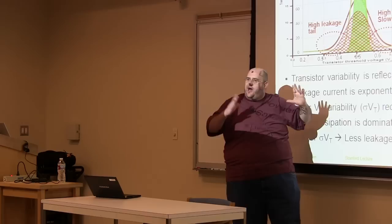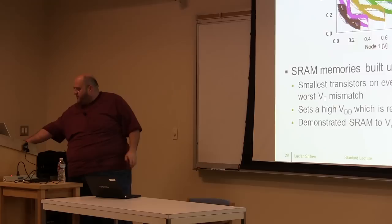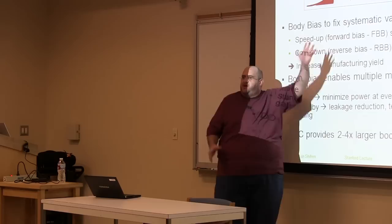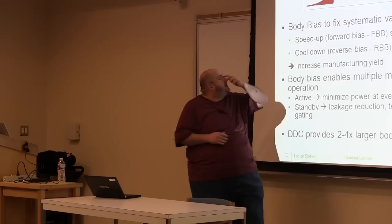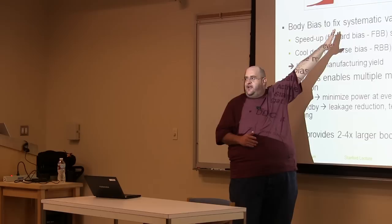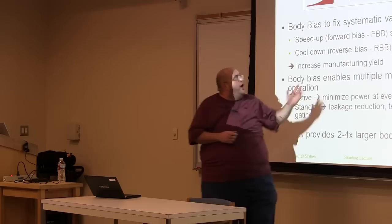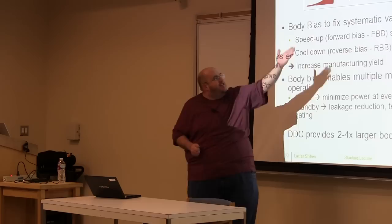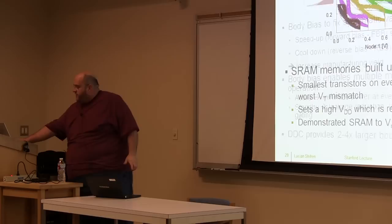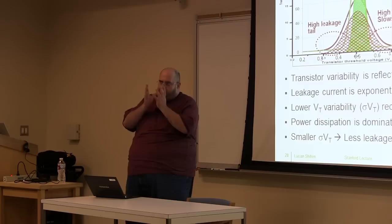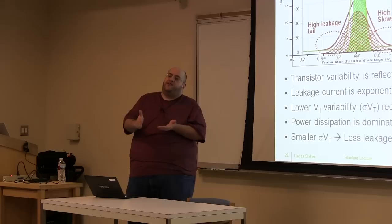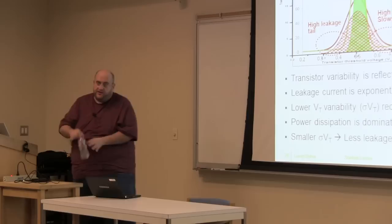But in the ASIC market there is no binning — it either passes or it doesn't. So your leakage is set by the leaky tail and your performance criteria are set by the slow tail; only what's in between passes. The wider the distribution, the fewer parts you can sell. Variation and variability is not just a nuisance to work around — it has real financial effects. It affects your leakage and your yield, and it's becoming more and more difficult to achieve high yields at advanced nodes.